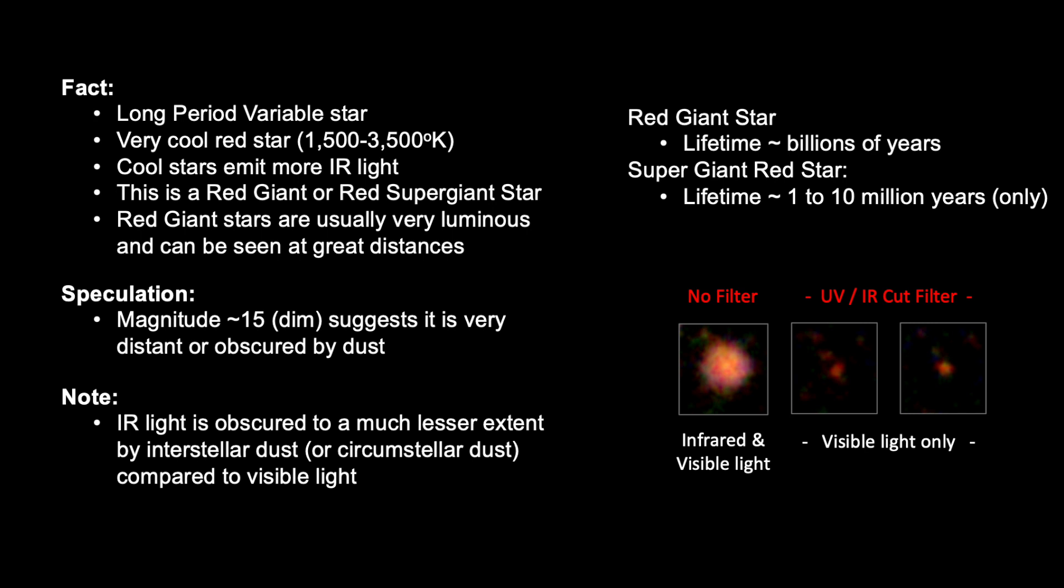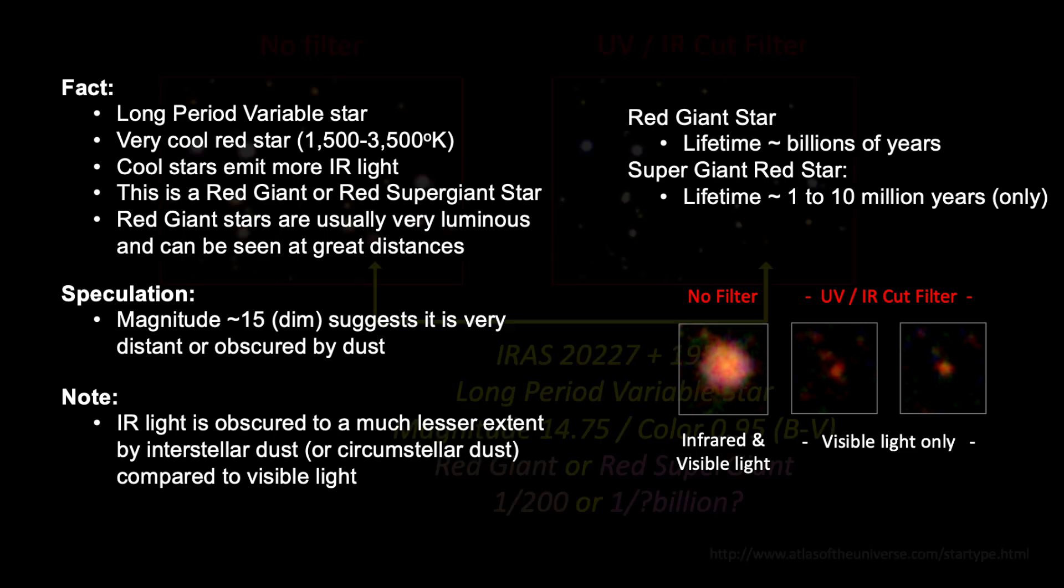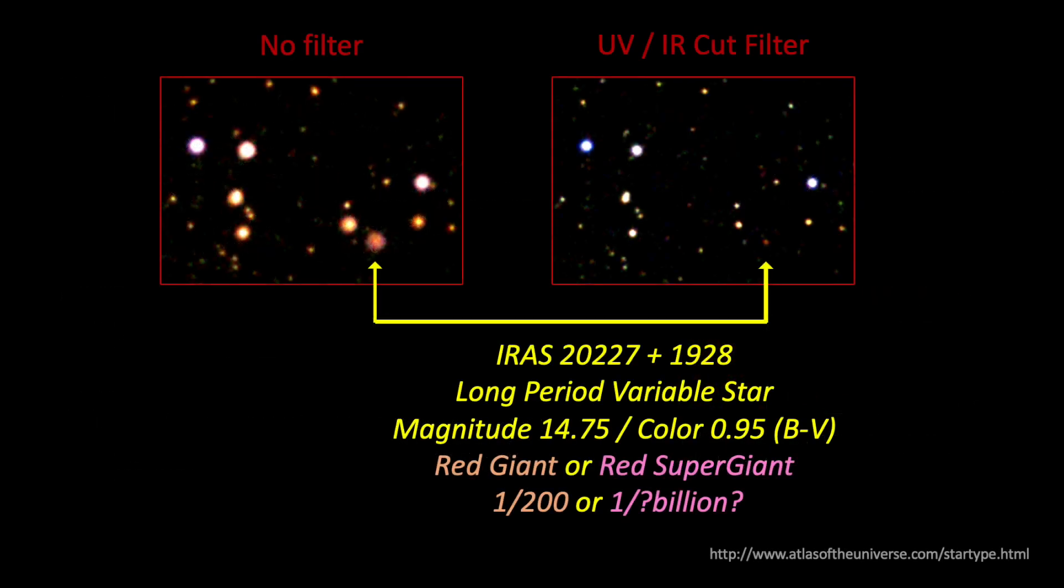If this is a red giant star, its lifespan from main sequence through the red giant phase can take billions of years. If this is a red supergiant star like Antares or Betelgeuse, its lifespan from main sequence through the red supergiant phase can take only about 1 to 10 million years. But what I actually do know for sure is that this star is a long period variable star. It is given the designation IRAS 20227 plus 1928. It is about magnitude 15, deep red in color, and it is either a red giant or a red supergiant star.